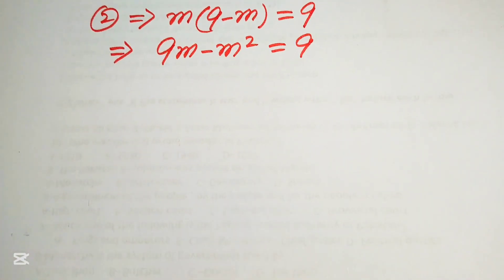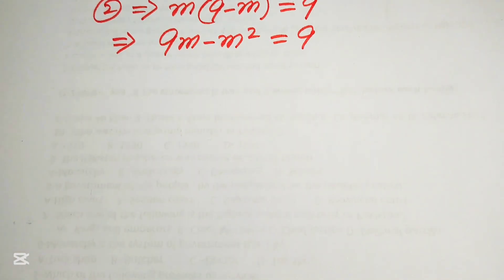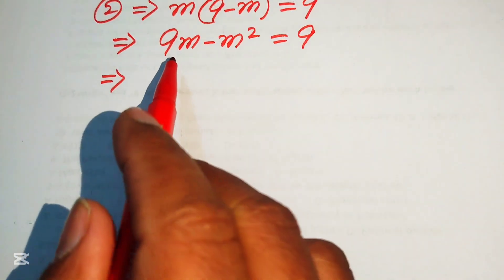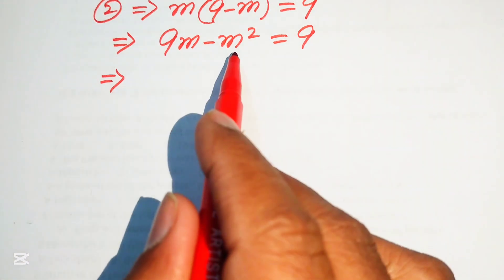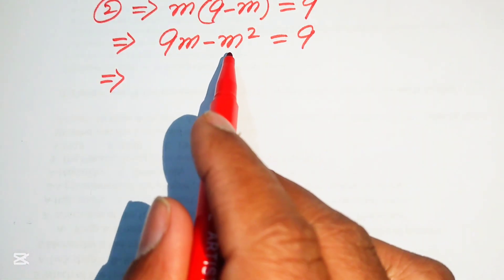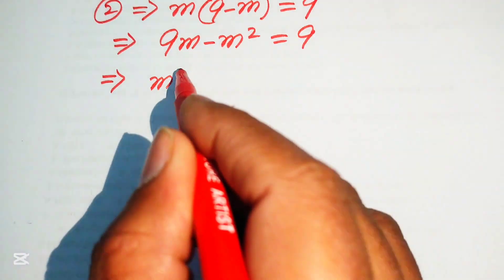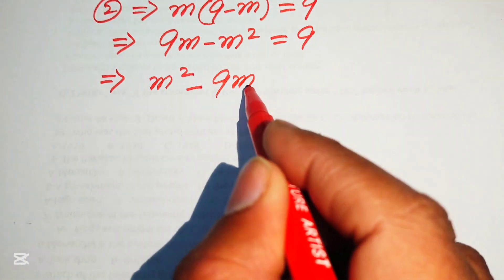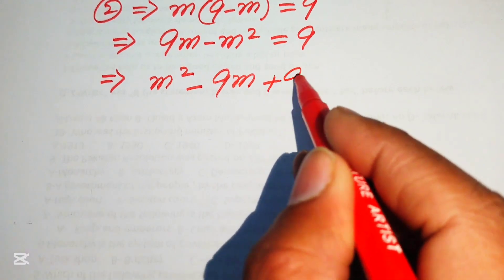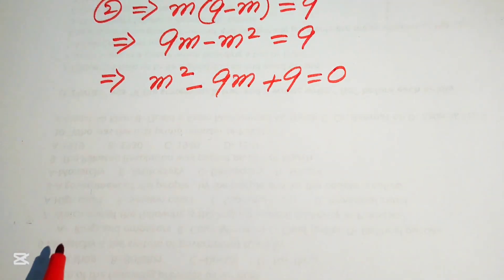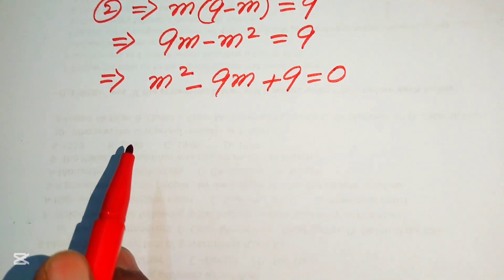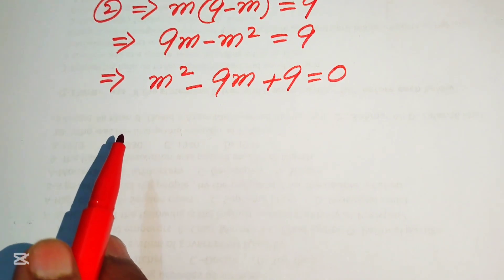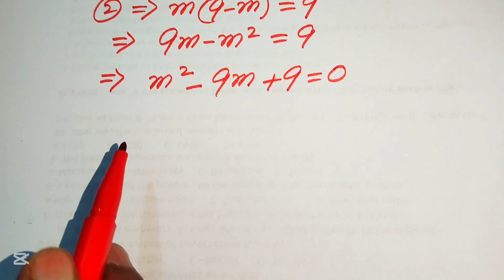This is quadratic in m but not in standard form. We convert it to standard form by moving the terms to the right hand side: minus m squared becomes plus m squared, plus 9m becomes minus 9m, giving us m squared minus 9m plus 9 equals 0. Now we apply the quadratic formula.